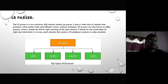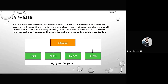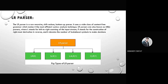The LR parser is a non-recursive shift-reduce bottom-up parser. It uses a wide class of context-free grammars, making it the most efficient syntax analysis technique. LR parsers are also known as LR(k) parsers, where L stands for left-to-right scanning, R stands for the construction of rightmost derivation in reverse, and K denotes the number of look-ahead symbols used to make parsing decisions.